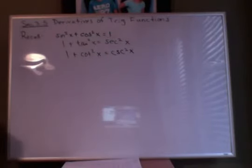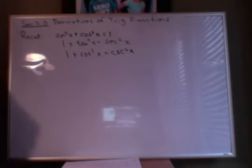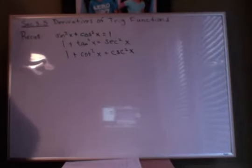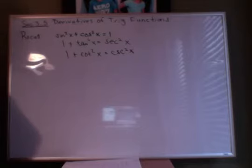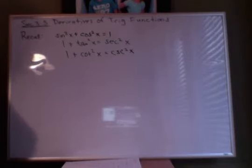In addition to the Pythagorean identities, you do need to know the reciprocal identities, like sine equals 1 over cosecant, and cosecant is 1 over sine. And also the quotient identities, which tell us that tangent is sine over cosine, and cotangent is cosine over sine. So take a moment to write those down — pause the video if you want — and then we'll move on.